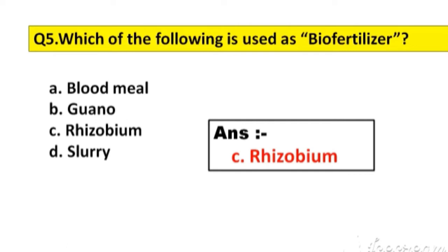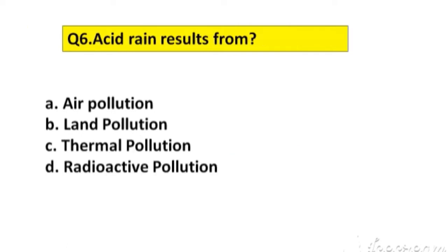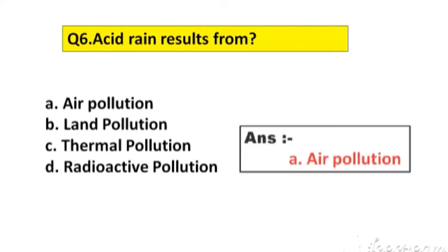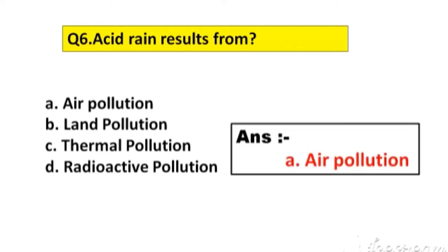Question number 6. Acid rain results from. Option A: Air pollution. B: Land pollution. C: Thermal pollution. D: Radioactive pollution. The right answer is option A, Air pollution.